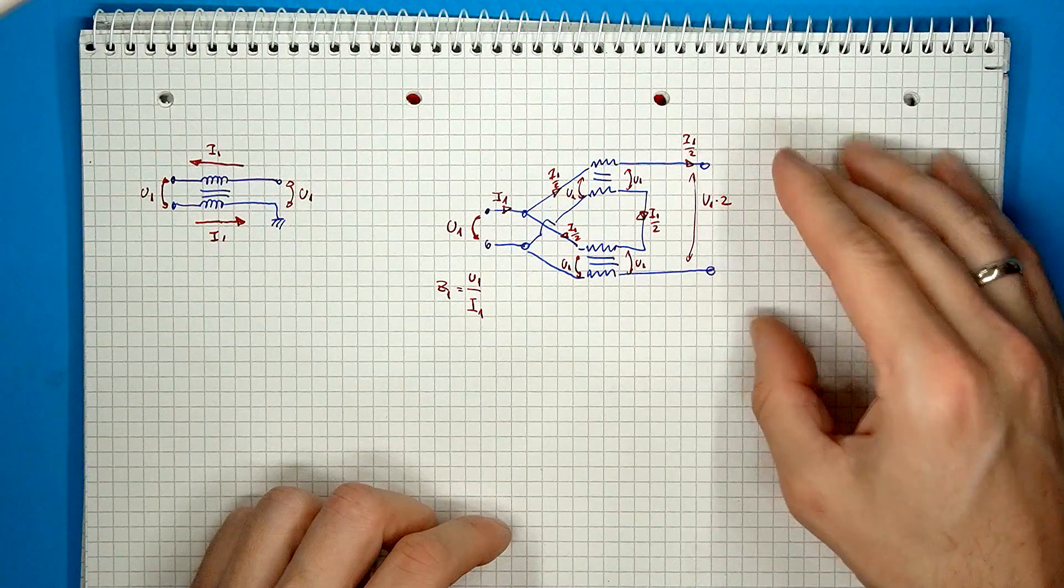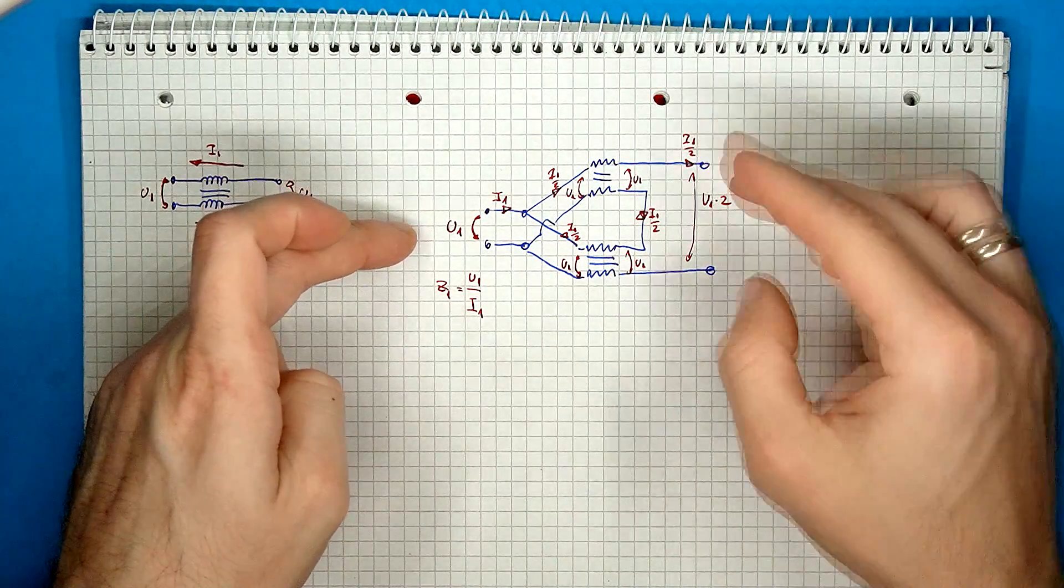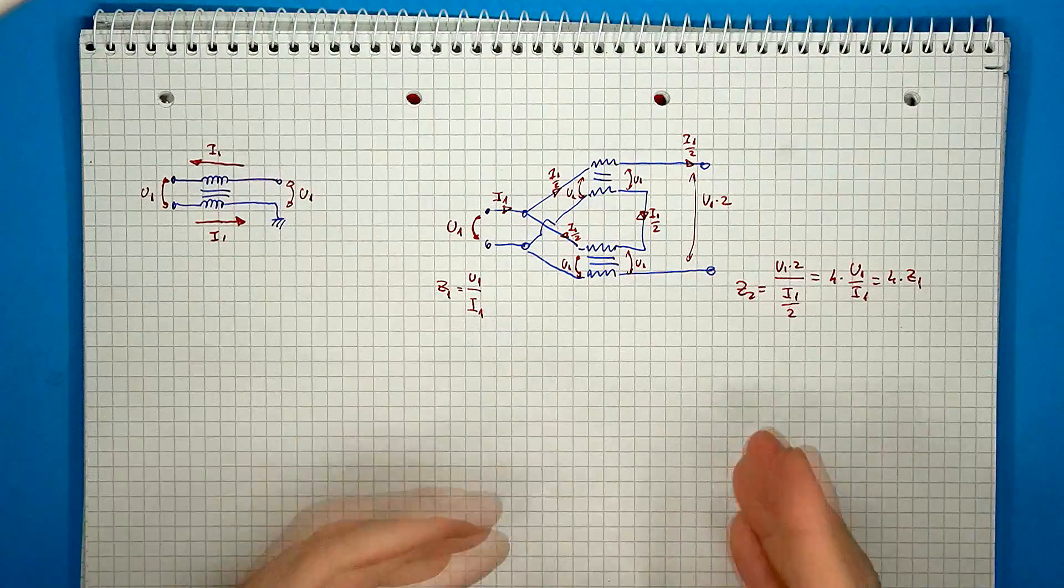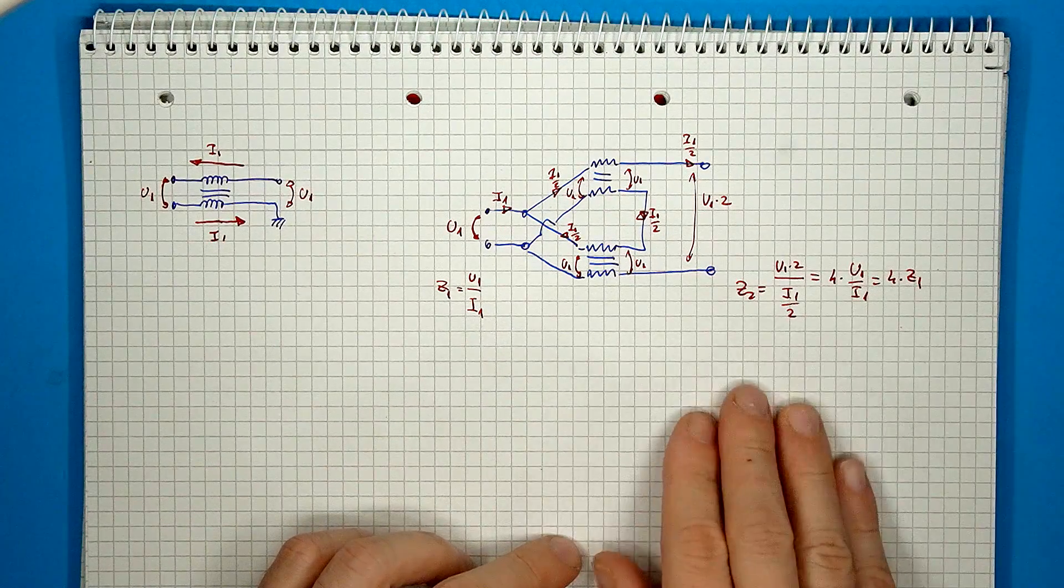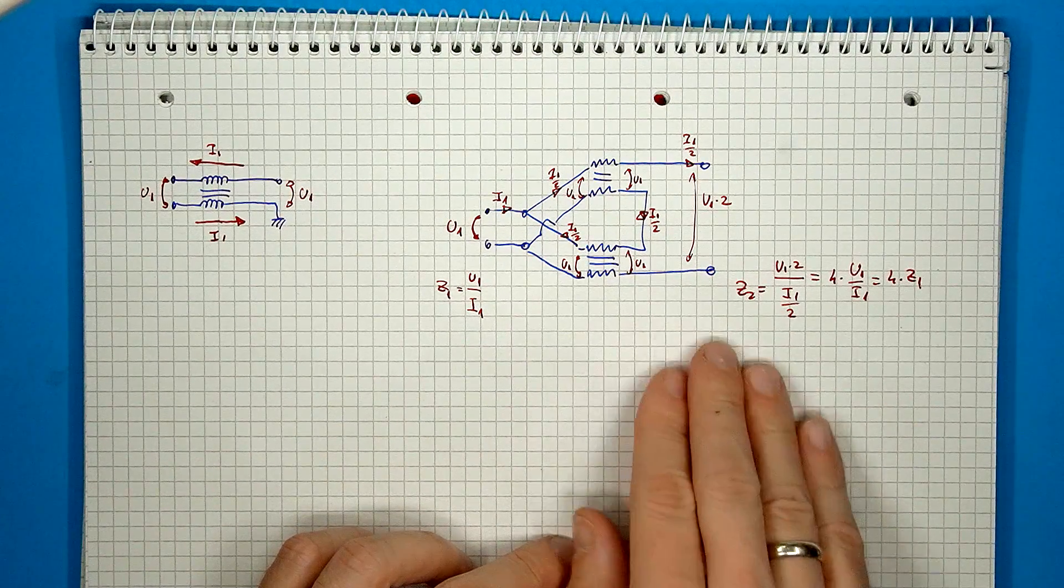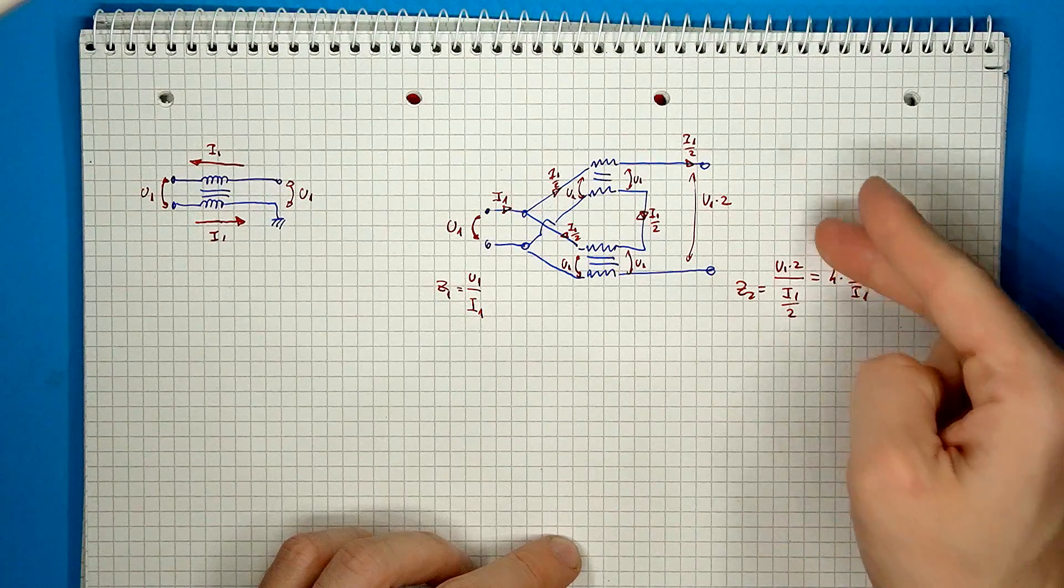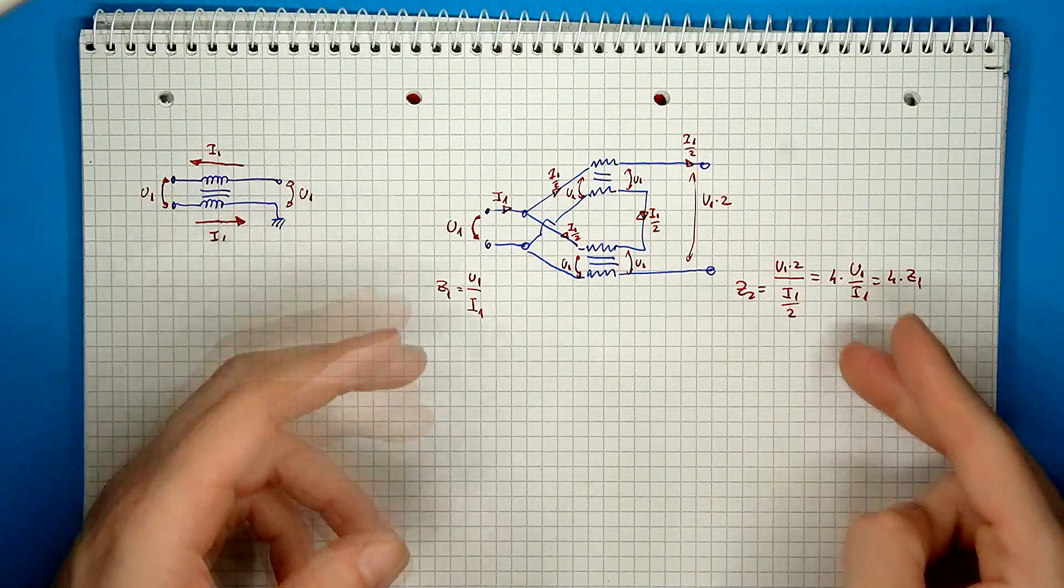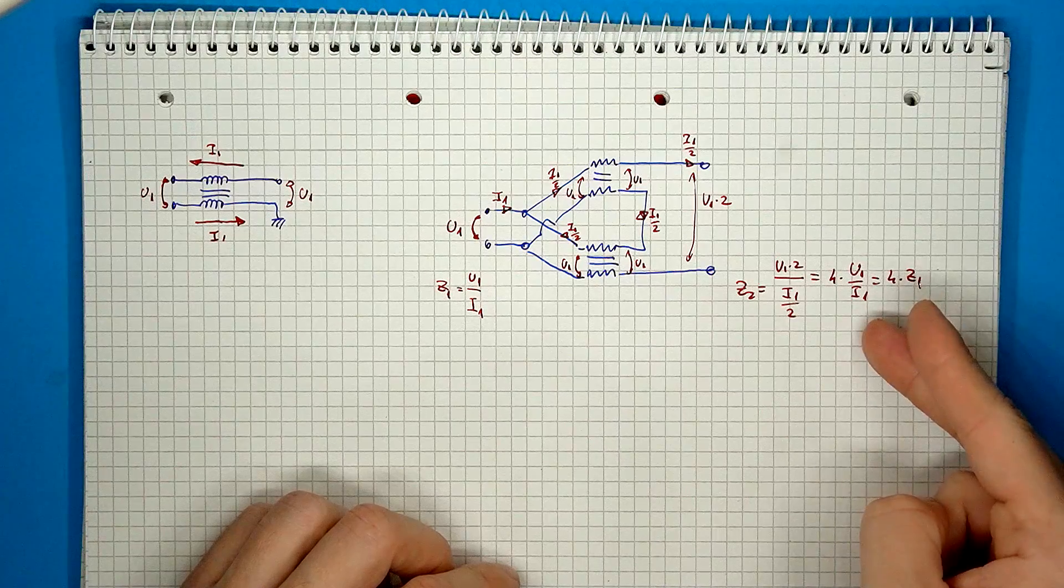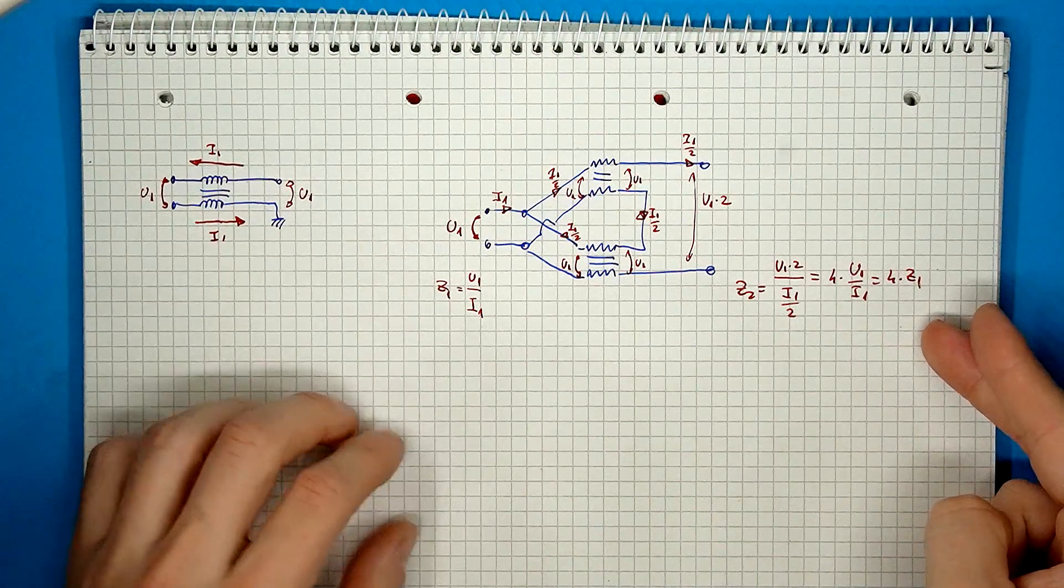And while a similar analysis can be done for the current, so the input current is divided into two equal halves which are then seen on the other side. So the second side will see twice the input voltage and half the input current.